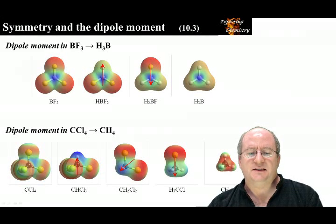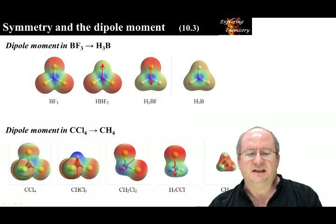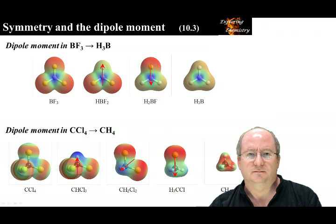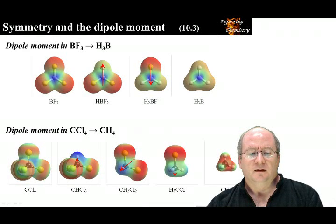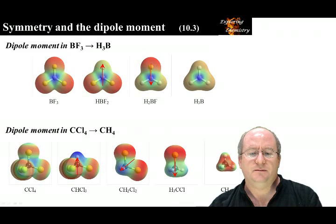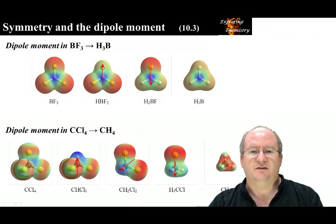The same exists for the progression from CCl4 to CH4. However, it is slightly more difficult to see in these images because of the tetrahedral geometry. In these figures, red indicates regions of high electron density, and blue indicates regions of low electron density. Take a minute to look at these images and understand the electron distribution. As a hint, consider the electronegativity of the atoms.